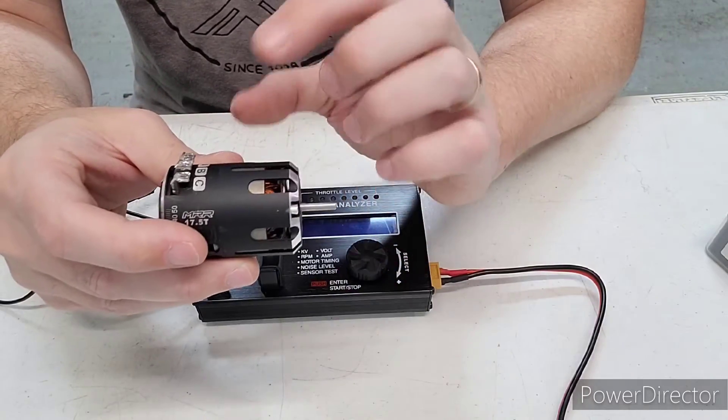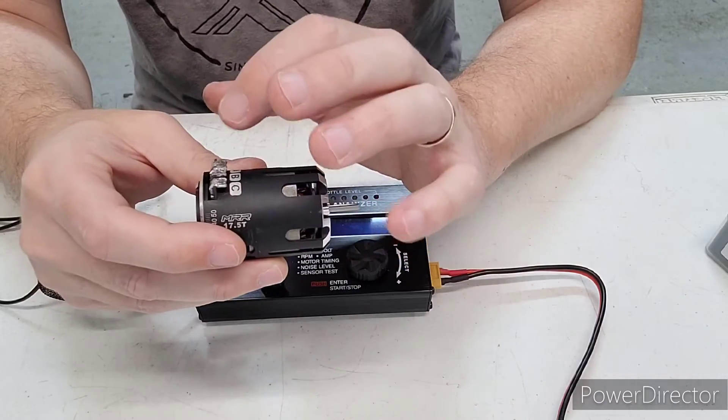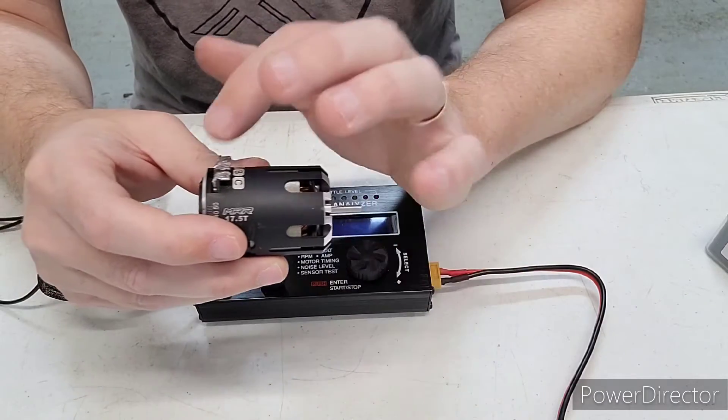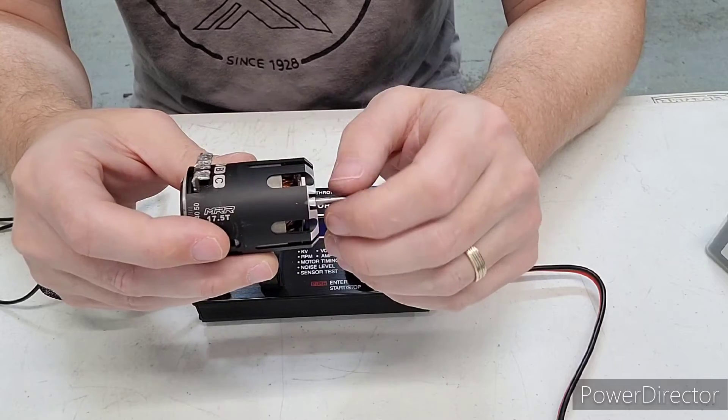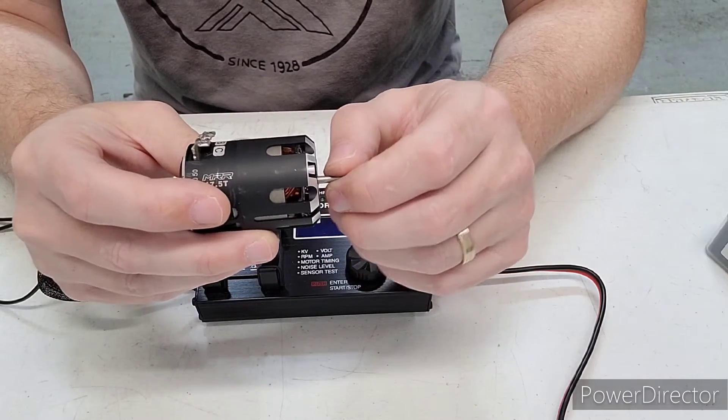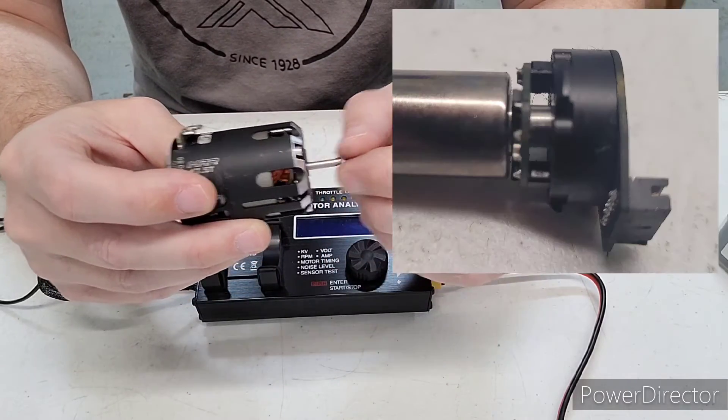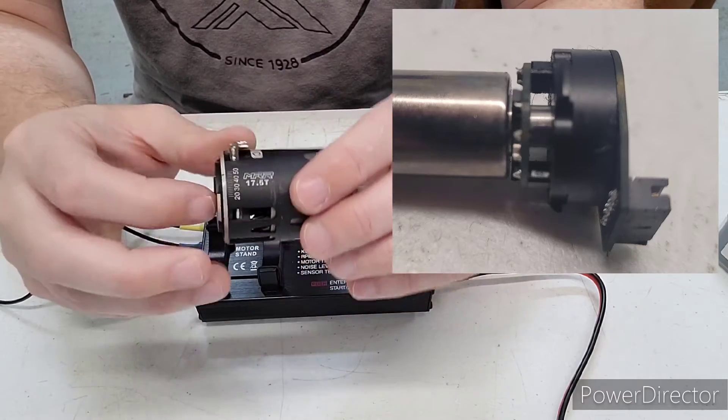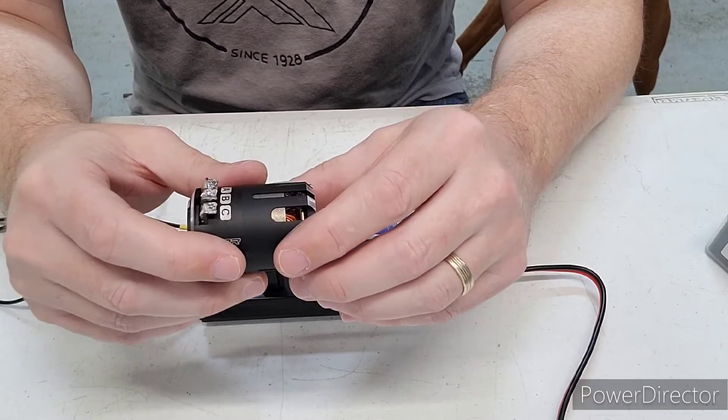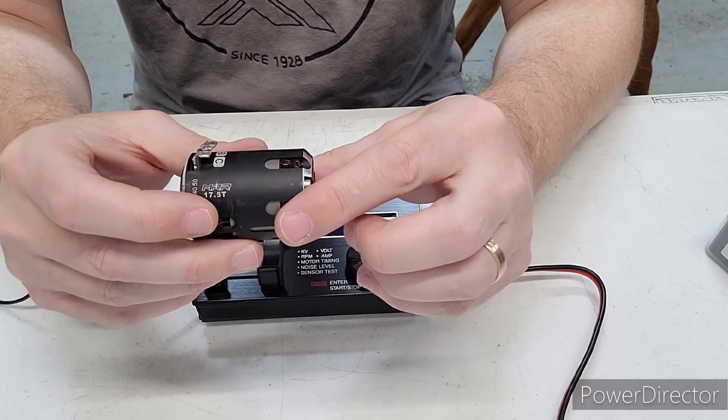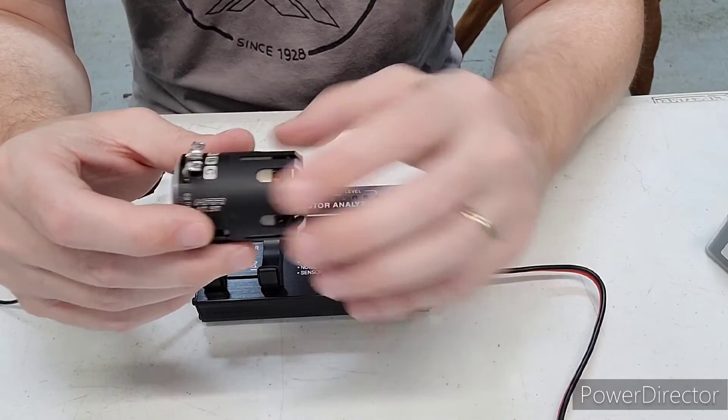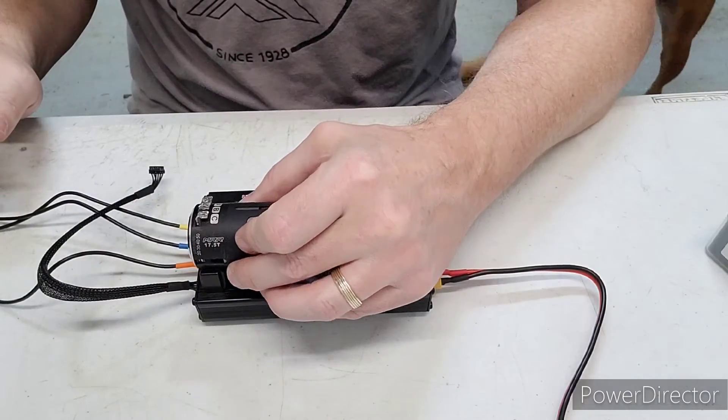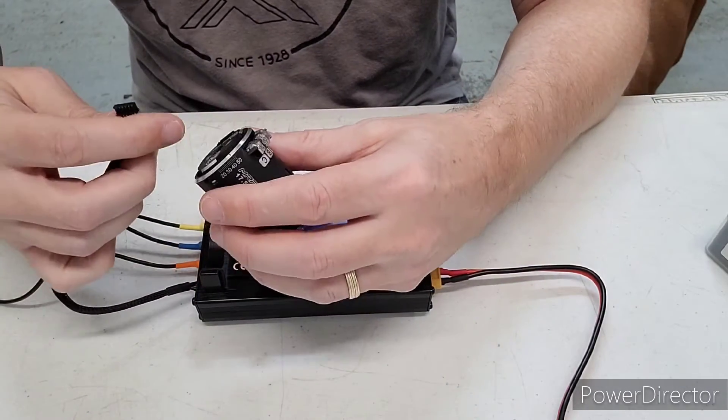And then also I'll put a picture, but you want the rotor to be as close to the sensor board as you can get without making contact. And so I'll show you a picture of what this motor looks like. I've already done that. So I'm not going to take this apart on camera. Maybe we'll save that for another video. So once you've done that, then you can hook this thing up.